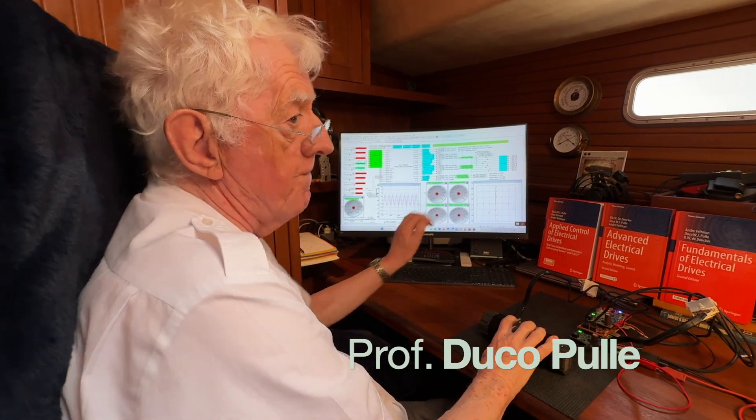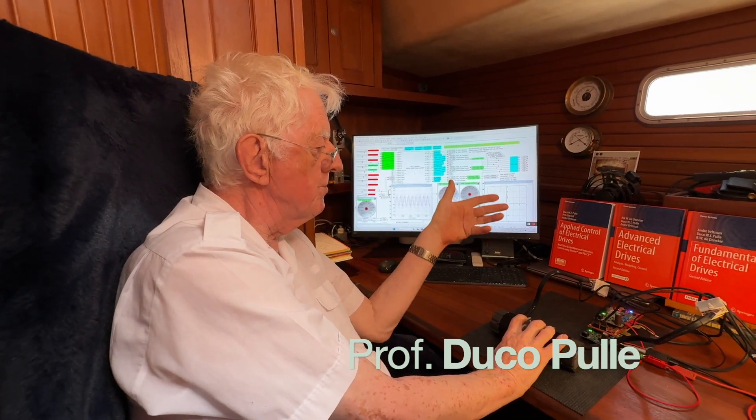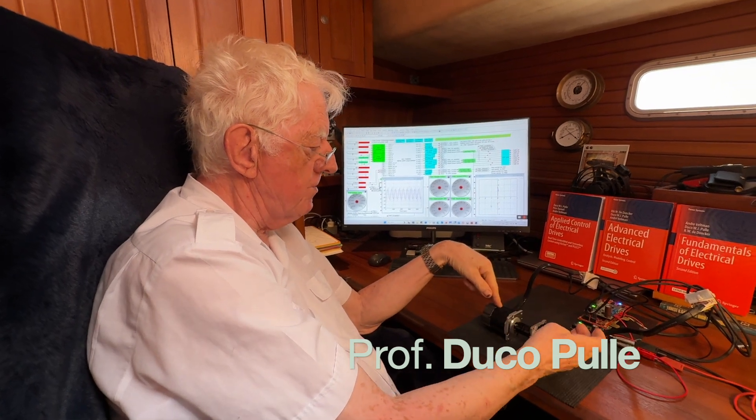And now, you see a situation where PM2 is motoring, and PM1 is generating. And that's reflected in the DQ diagram, PM1 red vector. There it is. That's the current I2. So, there you see full FOC control, speed control. You can do speed control PM1 and torque control PM2.